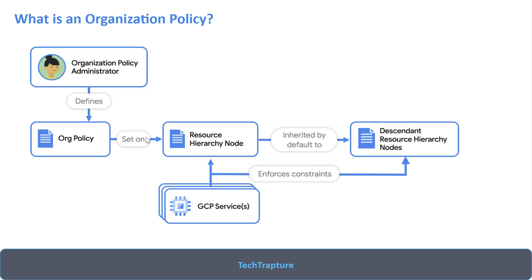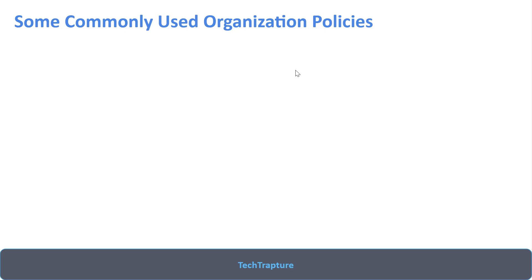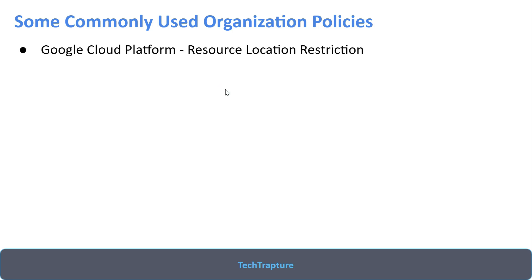Now let's look at the most commonly used organization policies. As an architect, the first recommendation is resource location restriction — work with your customer to decide what locations they want, such as US-central1 only, and restrict resource creation to that location. If anyone tries to create any resource — a storage bucket, Compute Engine, anything — outside that location, the creation will fail.